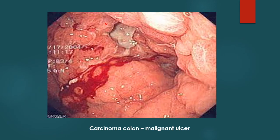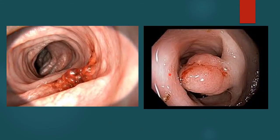This is a picture of a malignant lesion of the colon — a carcinoma of the colon which is ulcerated and bleeding, a malignant bleeding ulcer. These are two further pictures showing another carcinoma of the colon with bleeding and blood stains visible, as well as a malignant polyp with evidence of recent bleeding.